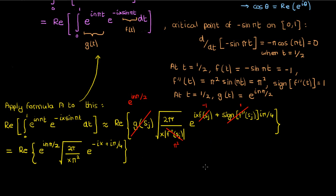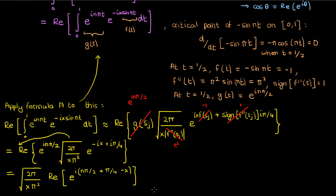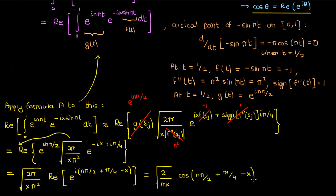The square root term is completely real so we take it outside the real part, and combining the exponentials gives the following. The real part of the exponential is just the cosine of the argument, which gives us the approximate value of the nth order Bessel function of the first kind as x approaches infinity. As x approaches infinity this expression goes to 0, since the cosine oscillates between 0 and 1 but the square root term in the denominator goes to 0 as x grows. That should do it for the video.